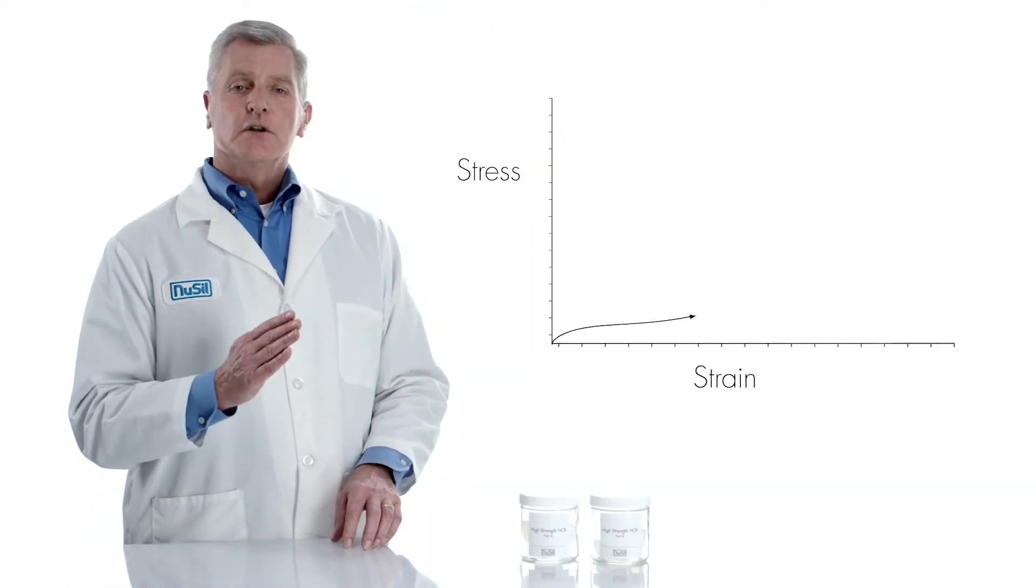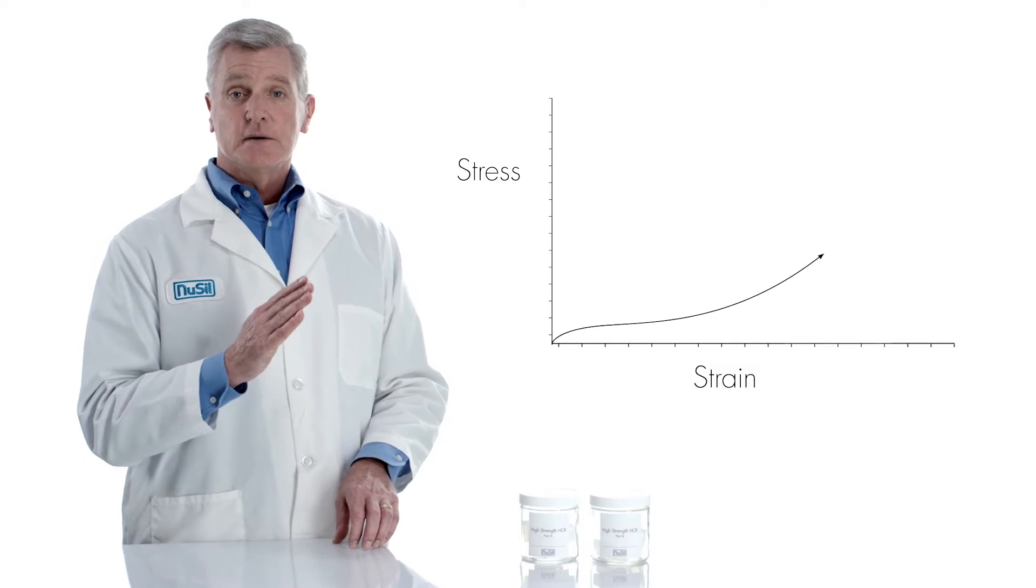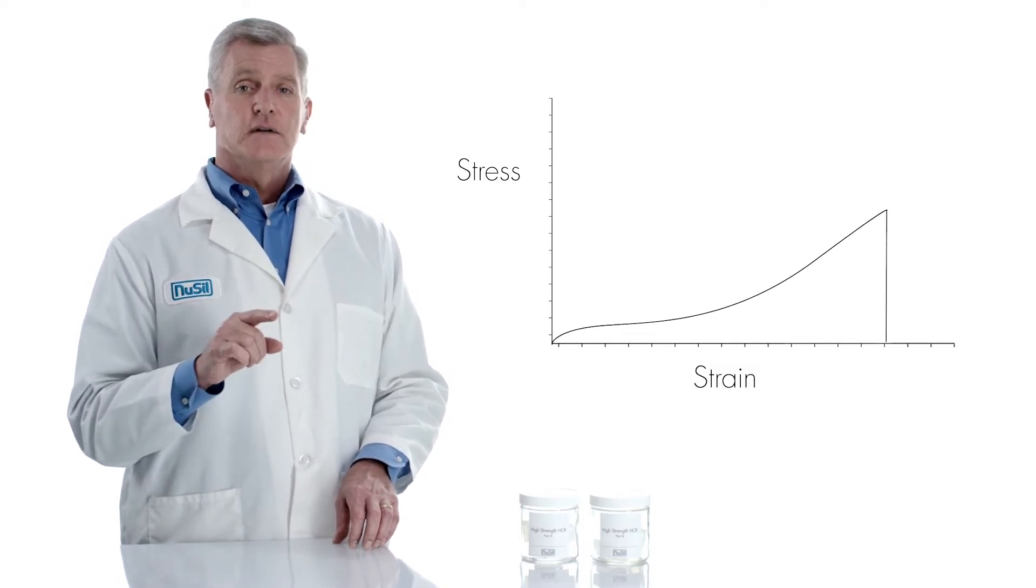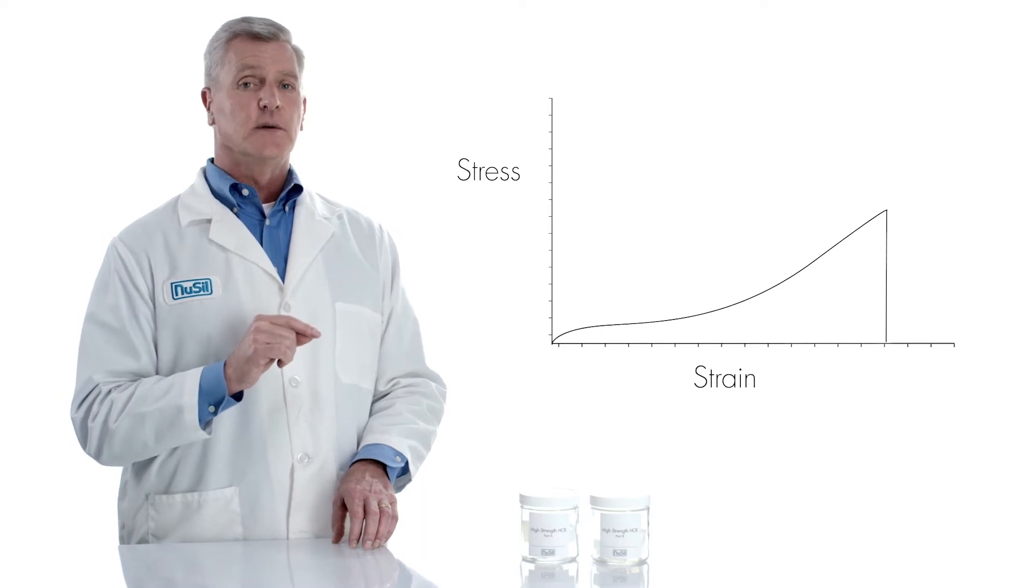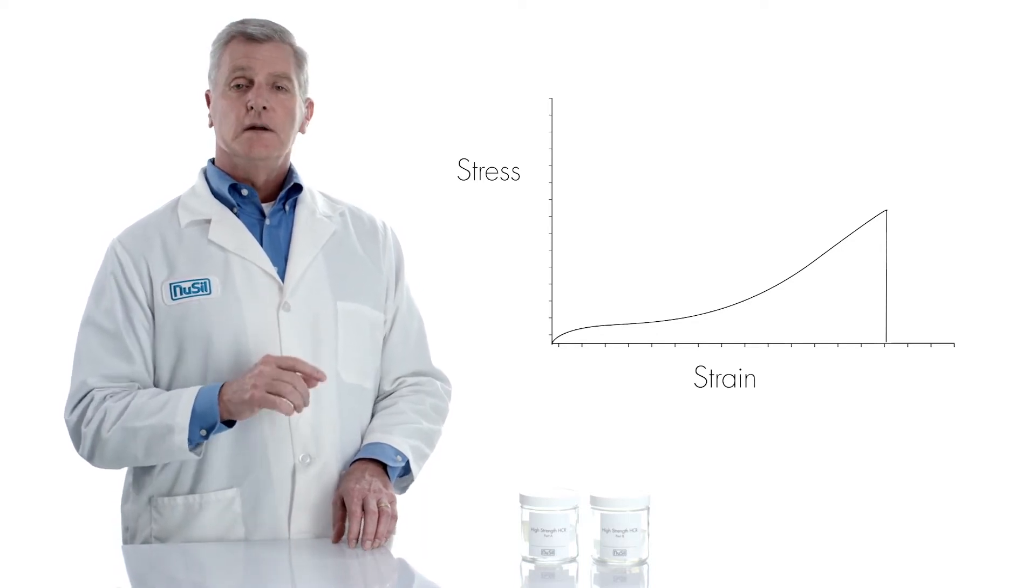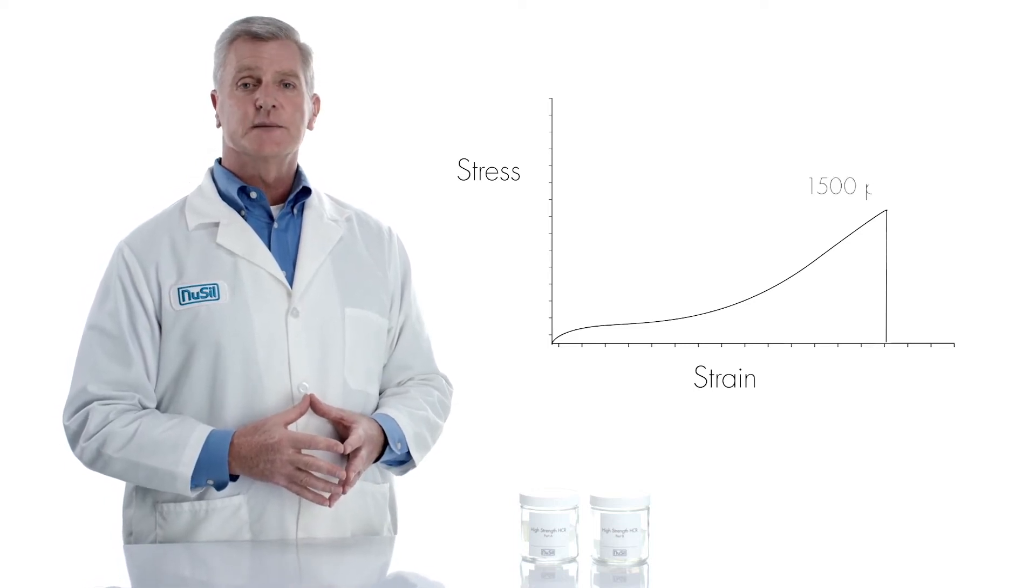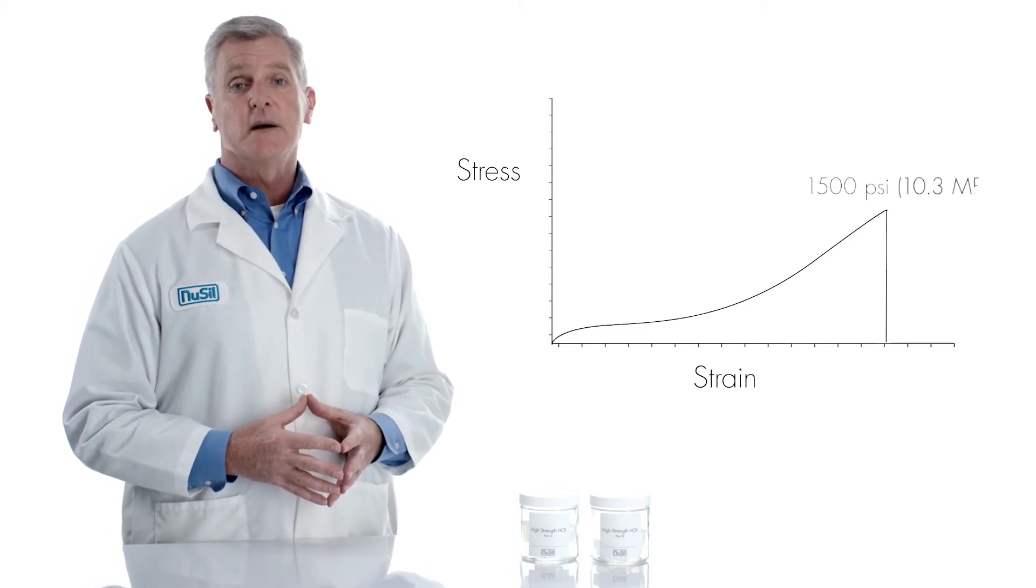And finally the slope steepens again as the material stiffens and approaches its break point. This S-curve that we see is fairly typical for platinum cure silicone elastomers. The ultimate tensile strength of this material is about 1500 pounds per square inch or about 10 megapascals.